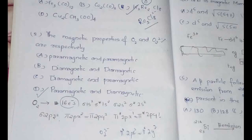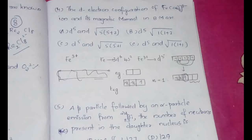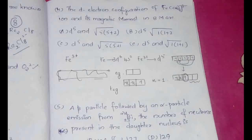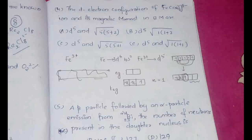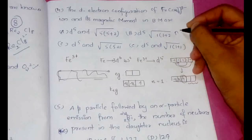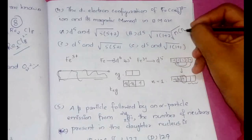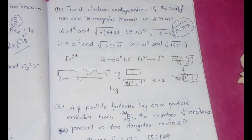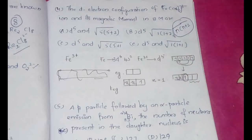The next question is the d electronic configuration of Fe(CN)6 3- ion and its magnetic moment in Bohr magneton are. So I have already done a video on the spin only formula and how to write that. So the spin only formula is equal to n into root of n into n plus 2, where n is the number of unpaired electrons. So all we have to find is the number of unpaired electrons in this particular example.